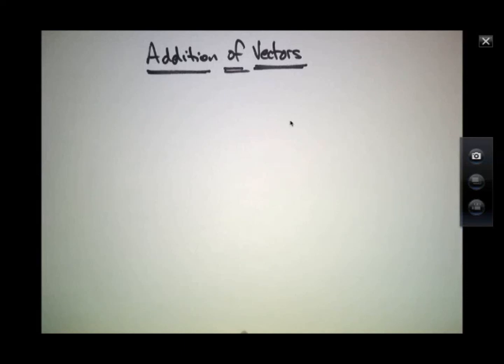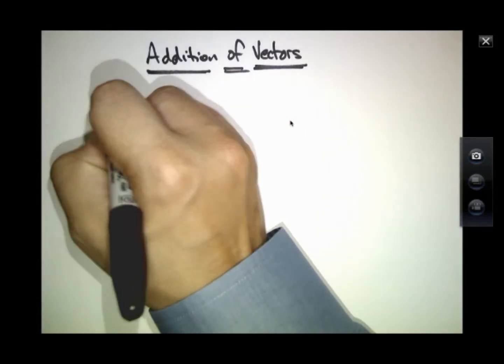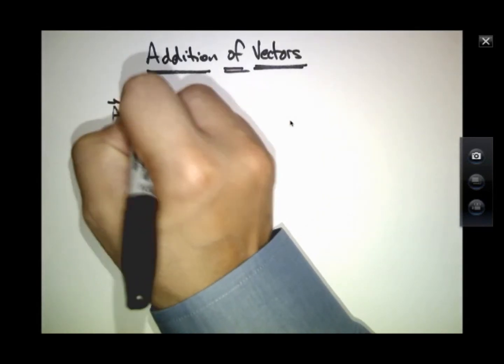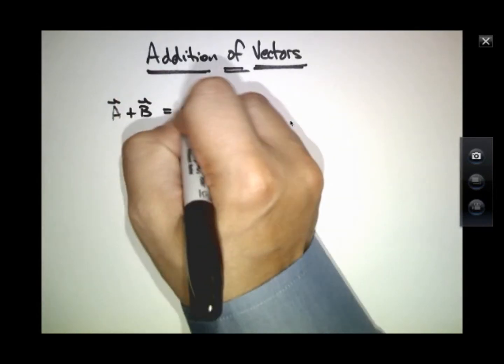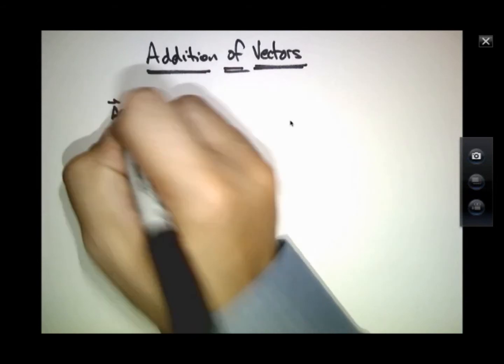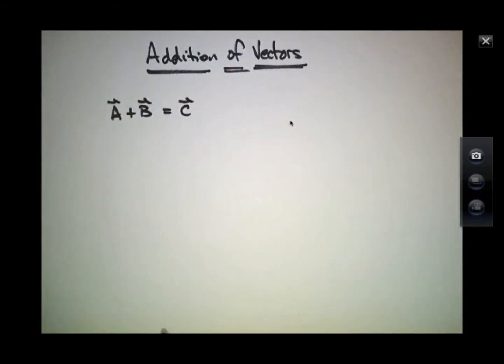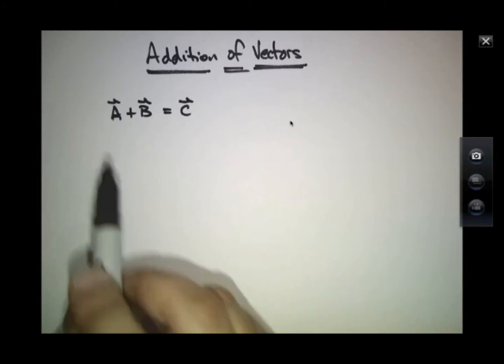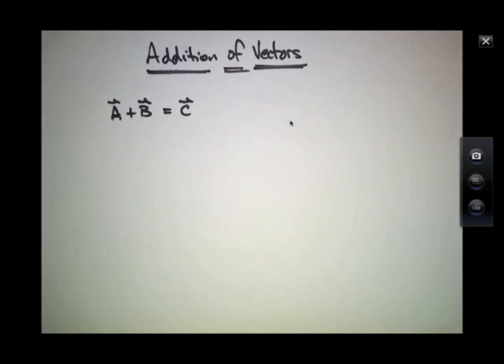We're going to talk about the addition of two vectors and what it means to do the operation of A plus B and ask whether that equals a third vector, C. Because vectors have both magnitude and direction, we'll think about this plus sign as having a somewhat different meaning than it just means in algebra class where I take 5 pounds and add 2 pounds and get 7 pounds.